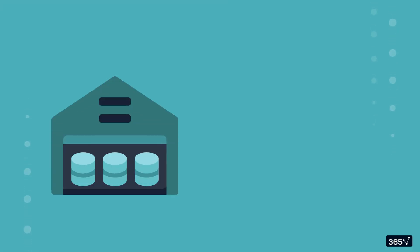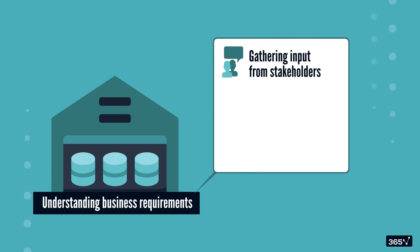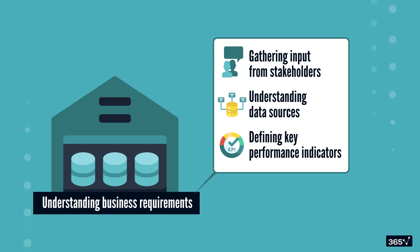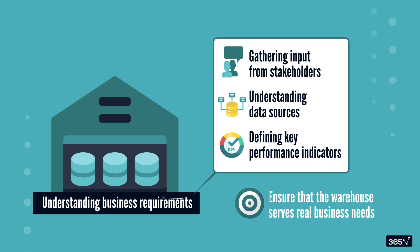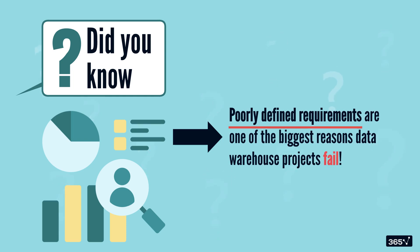Every great data warehouse starts with a solid foundation: understanding business requirements. Think of this as drawing a blueprint before building a house. This phase involves gathering input from stakeholders, understanding data sources, and defining key performance indicators. The goal? Ensure that the warehouse serves real business needs, not just stores data for the sake of it. Multiple marketing research studies have shown that poorly defined requirements are one of the biggest reasons data warehouse projects fail. Take the time to get it right.